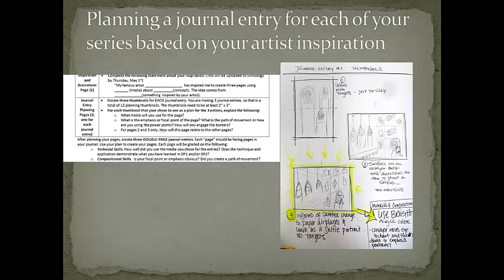You're going to take your concept and make three pieces that work as a series — related in color, related in theme, related in media. For each double page spread (two pages in your journal that face each other), you have to do one planning page. On a planning page, you have to do three thumbnails — so nine thumbnails total, even though my paper says 12. I had a little trouble with the math.